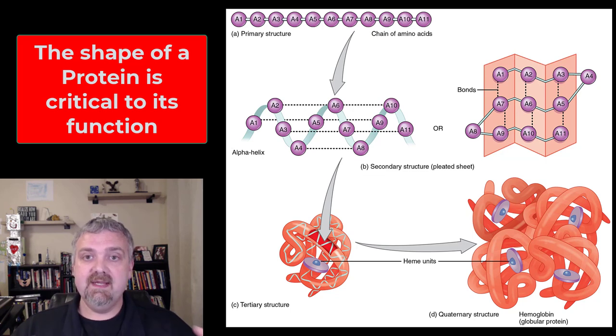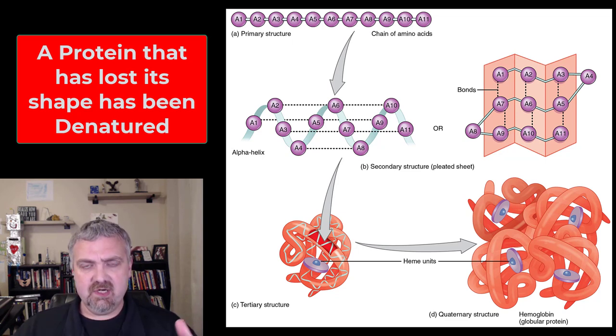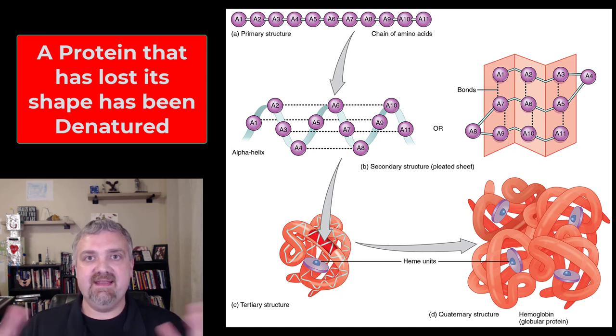If a protein loses its shape, it loses its function. A term to know before we jump in is denaturation. Anything that causes a protein to denature will cause it to lose its shape—that can be high heat, acids, etc. I won't go into detail now, but make sure you understand denaturation. If you denature a protein, it loses its shape. When you cook an egg, that's what happens. You denature the proteins in the clear part of the egg, causing them to change and become white.